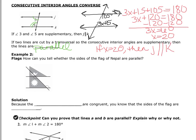Example two: how can you tell whether the sides of the flag of Nepal are parallel? Here's a transversal, and they've told you these angles are congruent — they're marked for a reason. We can say yes, the sides are indeed parallel because the alternate interior angles are congruent, so we know the sides of the flag are parallel.